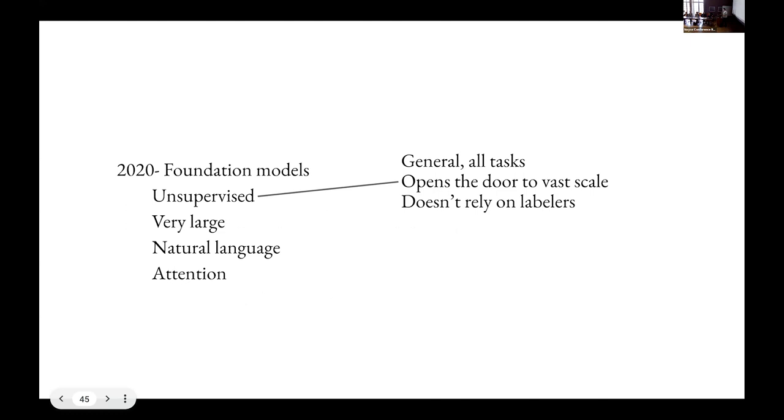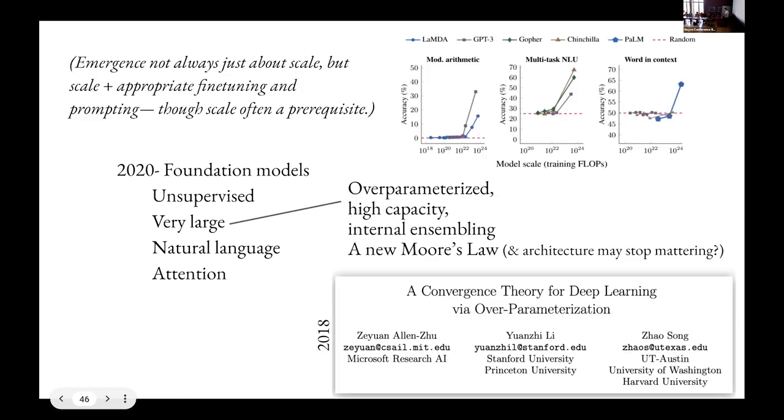The fact that they're unsupervised means that they're general across tasks, and it opens the door to very large scale and doesn't rely on labelers. And this is important because anytime you're talking about learning things from scratch using labeled data, all you can do is replicate what the labelers have done. And when instead you are learning in an unsupervised way, then that opens the door to generality. The emergence of properties happens as a function of scale, but also as a function of appropriate fine-tuning and prompting. Although scale is often a prerequisite to these things. There are some interesting papers that suggest that the details of architecture may stop mattering once scale goes beyond a certain point. And those are quite interesting, but I don't have time to go into it.